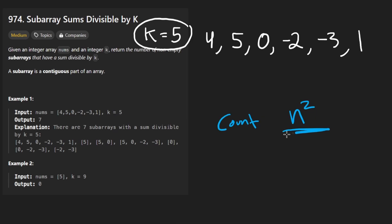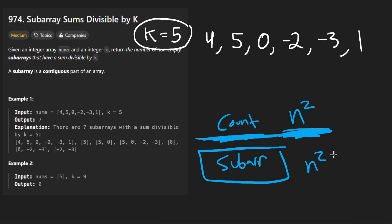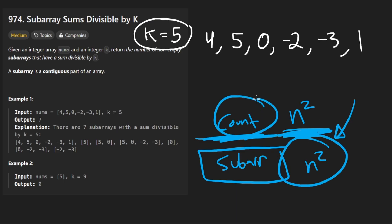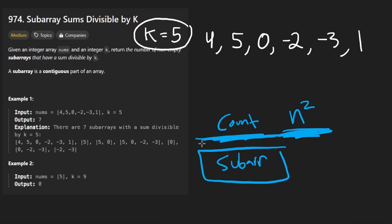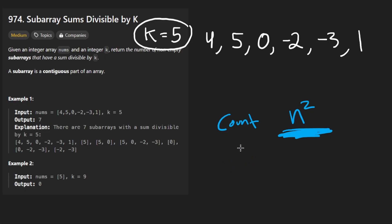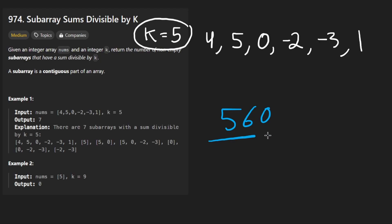Can we really do better than an n squared solution? It's because we don't actually have to build the subarrays themselves — we're counting them. If we had to build every subarray, there'd be roughly n squared in the worst case. But this time we're counting, not building. Therefore it might be possible to optimize, and we can indeed do that using the core ideas from LeetCode problem 560.